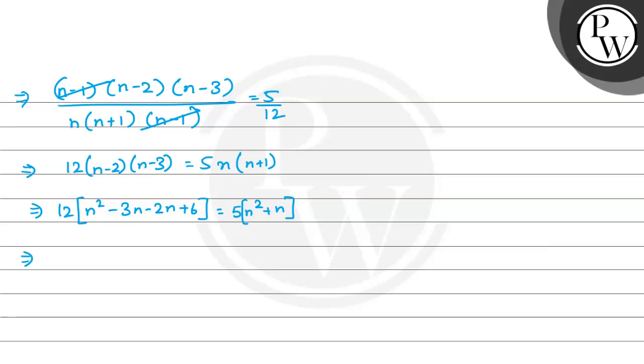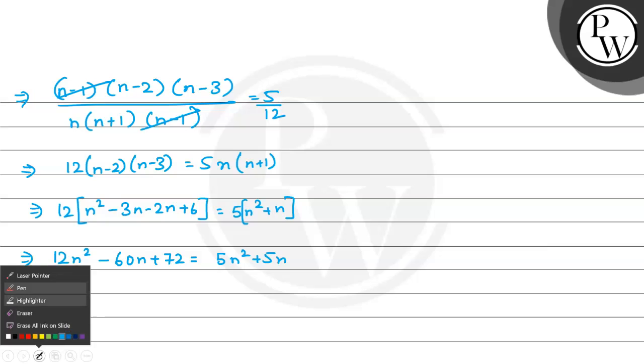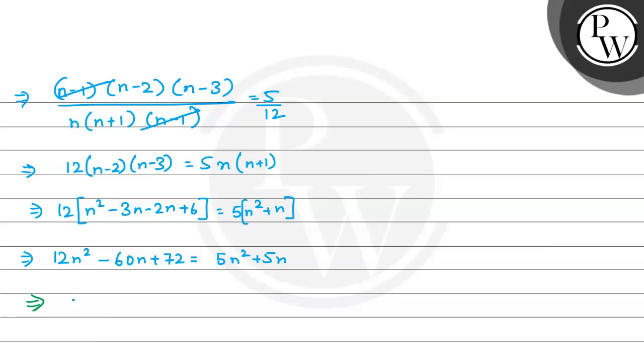Let us open. This becomes 12n square minus 60n plus 72 equals 5n square plus 5n. Let's take everything to the left hand side. So this is going to be 12n square minus 5n square, which is 7n square, then minus 60n minus 5n, which is minus 65n, plus 72 equals 0.